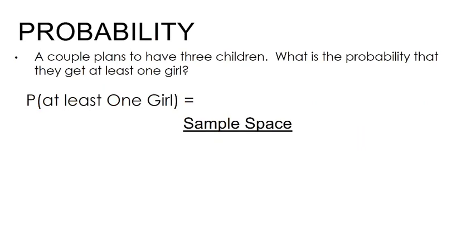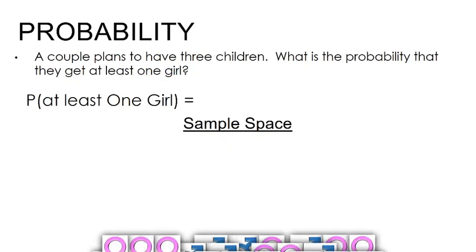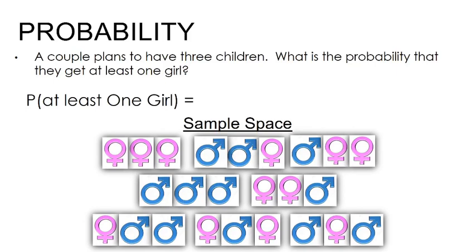Now a couple plans to have three children. What's the probability they get at least one girl? It's really important to understand sample space here — let's list all the different ways you can have three children. You could have girl-girl-girl, boy-boy-girl, boy-girl-boy, and so on. When you list them all out, there are eight total outcomes.